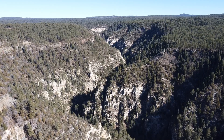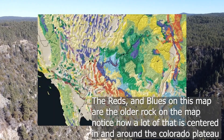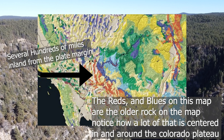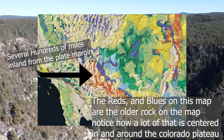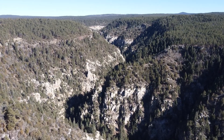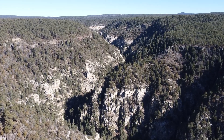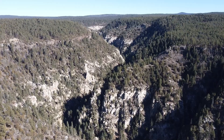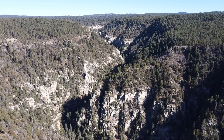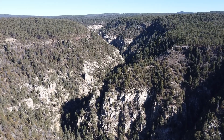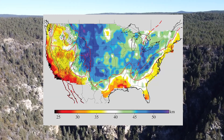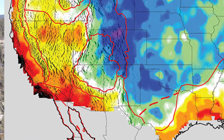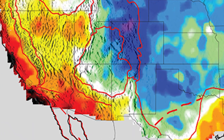It's also older rock, which is far away from plate margins. Rock in the interior parts of plates is more stable because it is not as affected by plate interactions, which tend to be most prominent at plate boundaries. Lastly, the Colorado Plateau is just pretty thick.